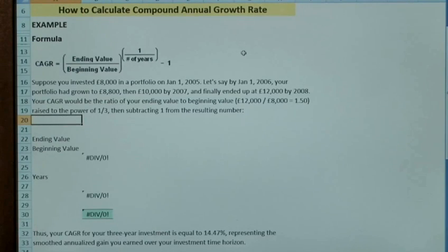In terms of the formula for the compound annual growth rate, we see that we need to take into consideration our ending value and the beginning value, so over whatever period we're talking about, and this is then raised to the power of one divided by the number of years again that we're talking about, less one.